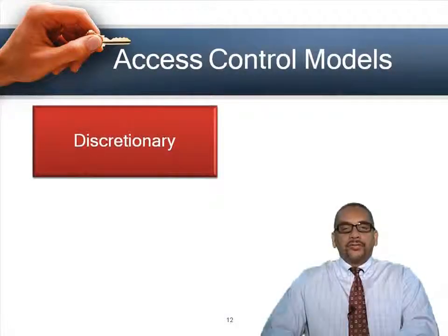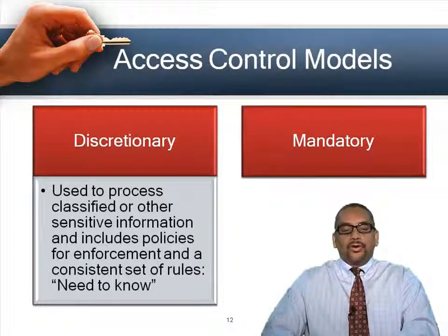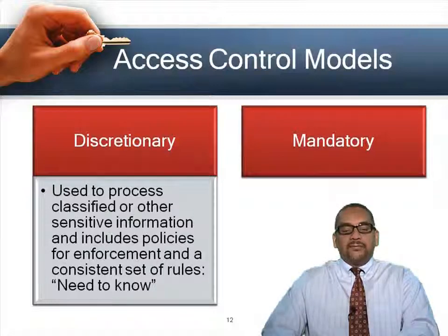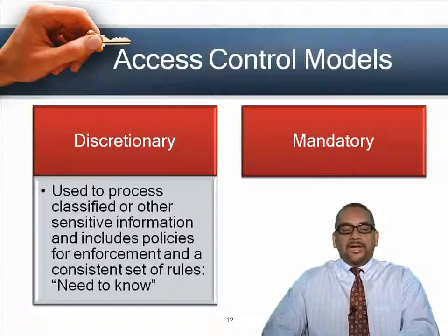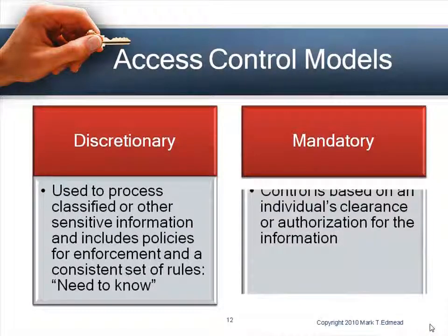There are several access control models. Discretionary access control is where the owner decides who can access resources or not, keeping in mind the need-to-know rule. Just because somebody has access doesn't mean they should have access, because access should be on a need-to-know basis. That is discretionary — the owner has the discretion of allowing access to certain resources.